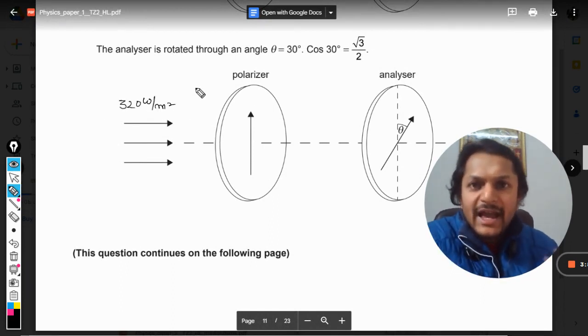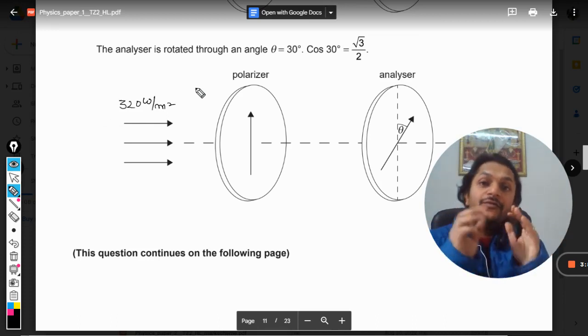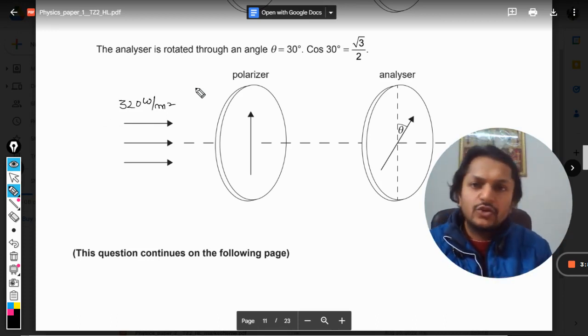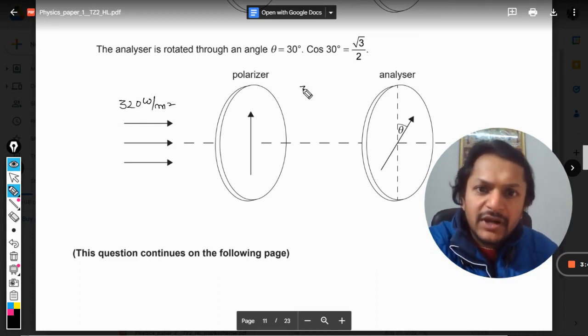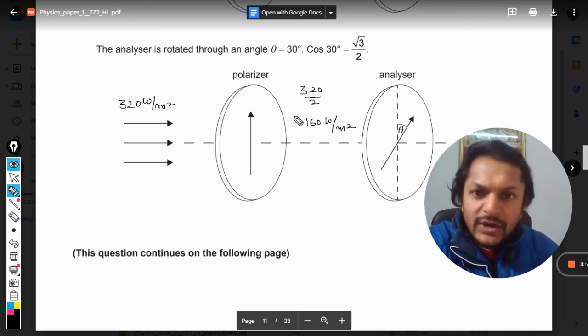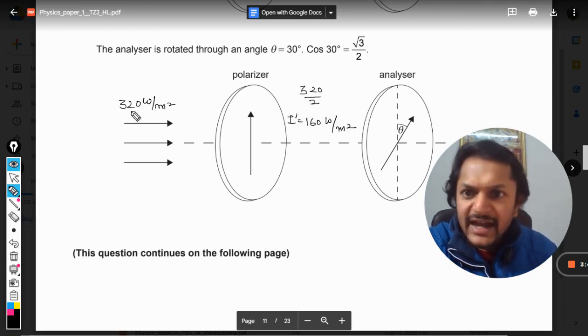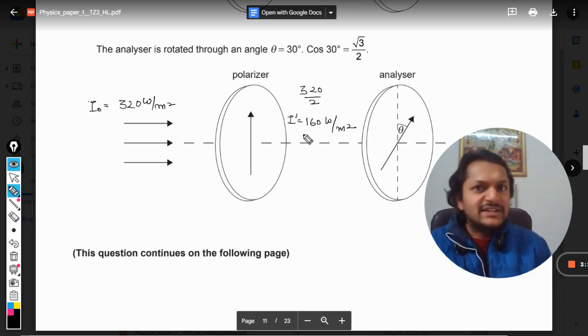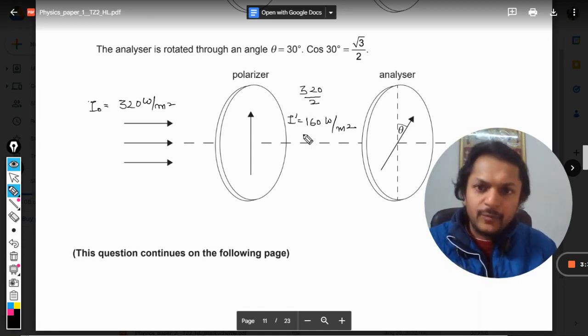So as a matter of fact, we know that whenever the unpolarized light is passing through the polarizer first time, the intensity only becomes 320 divided by 2, that is 160 watts per meter square. So intensity here I'm just calling it I dash, and this is I naught. So intensity here will be 160 watts per meter square, whatever be the rotation for the polarizer.